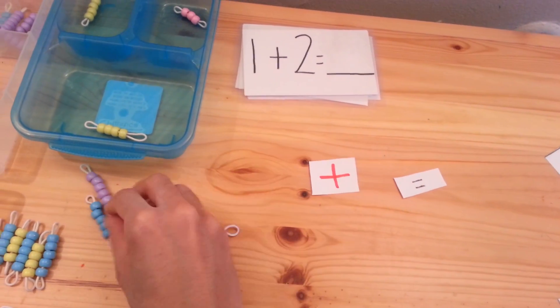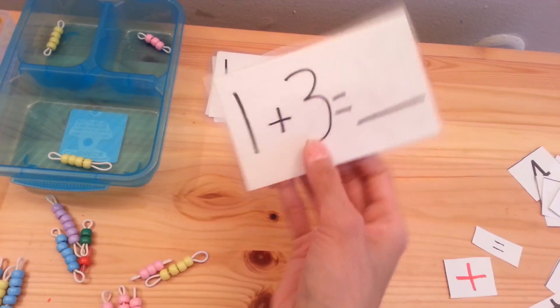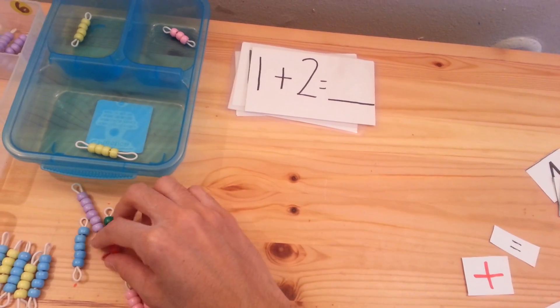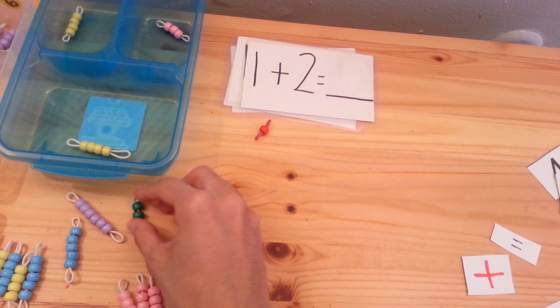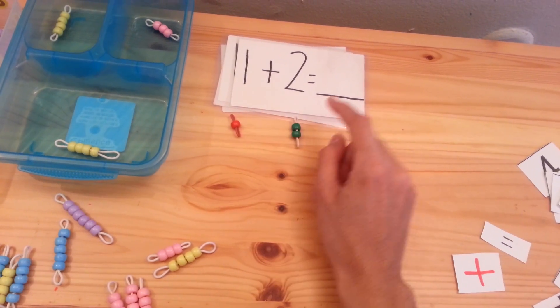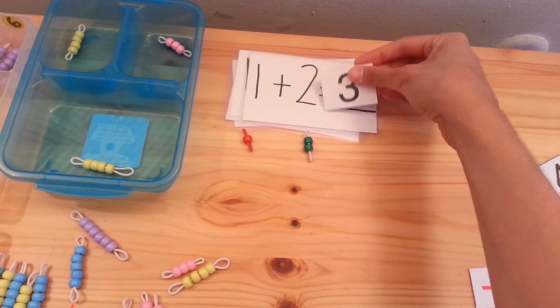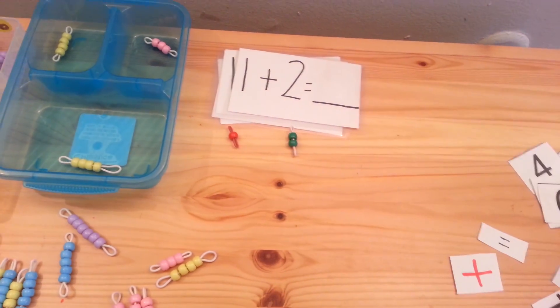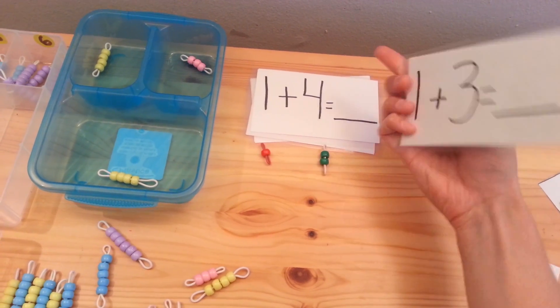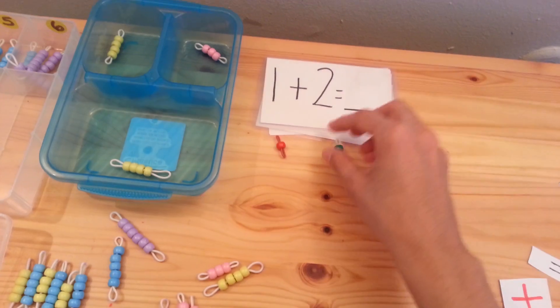Once they have mastered this, you can move on to having index cards and they can work independently on this. These are laminated index cards. Here we have one plus two. One, plus two. What's one plus two? One, two, three. One plus two is three and they would write it out. Or if they cannot write yet, you can have them put a number card here. And they can go on and on doing these addition problems. This is a great way to do independent work and have them work with these beads.